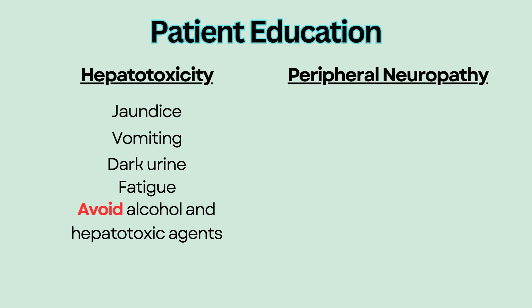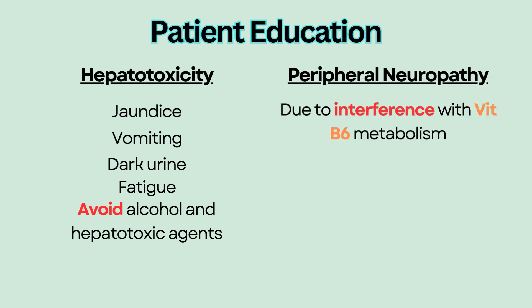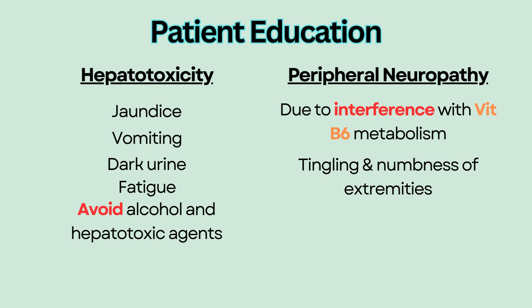Peripheral neuropathy is another common side effect because isoniazid interferes with metabolism of vitamin B6, resulting in tingling and numbness in the hands and feet. Patients can take pyridoxine, which is a vitamin B6 supplement, to prevent neuropathy.